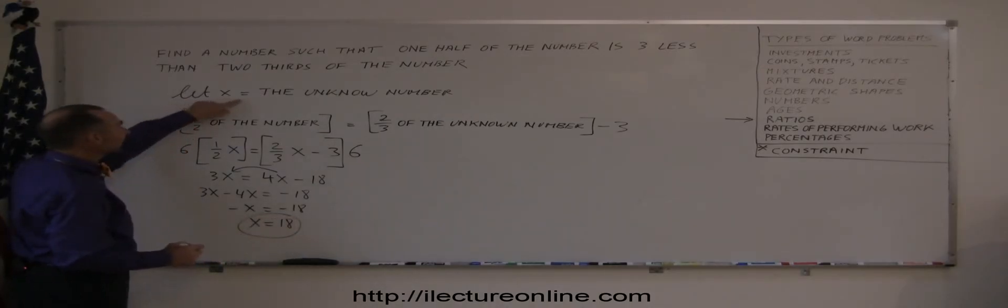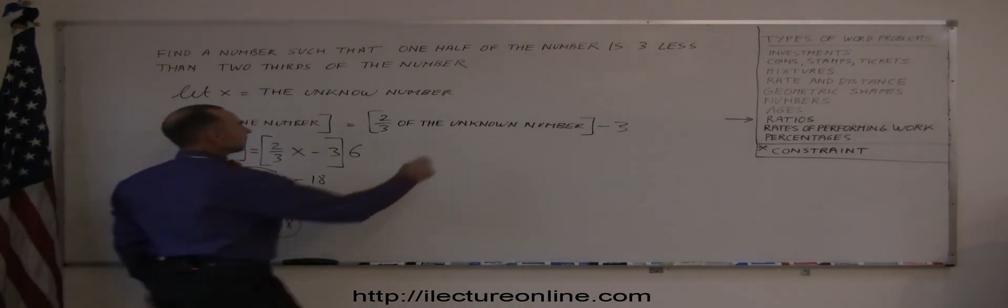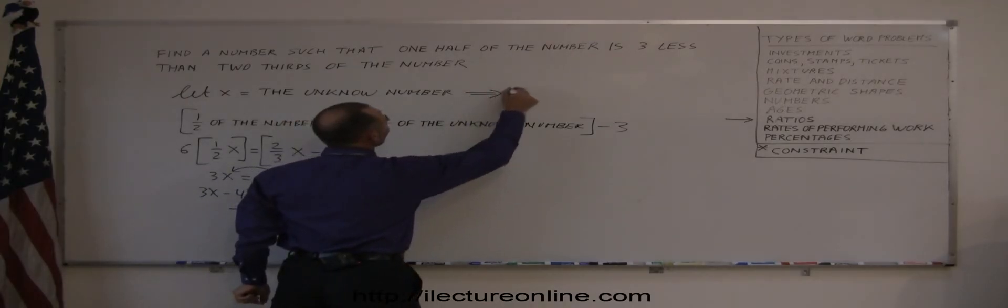And if we go back up here, since x is the unknown number, the unknown number is eighteen.